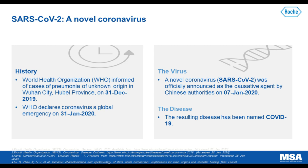The World Health Organization was informed of cases of pneumonia of unknown origin in late December of 2019. Roughly one month later, the World Health Organization declared a global emergency. The novel pathogen was identified as SARS-Coronavirus-2 and was sequenced and named on January 7th. The disease that this pathogen causes has been named Coronavirus Disease 2019, or COVID-19.